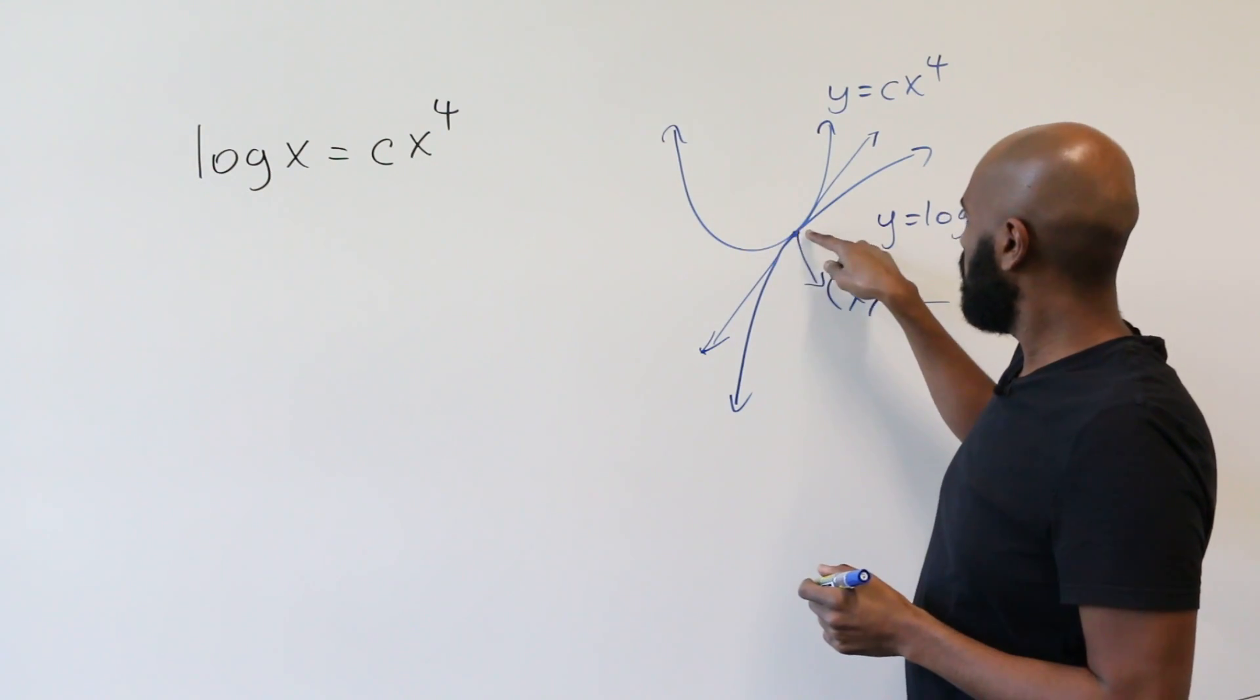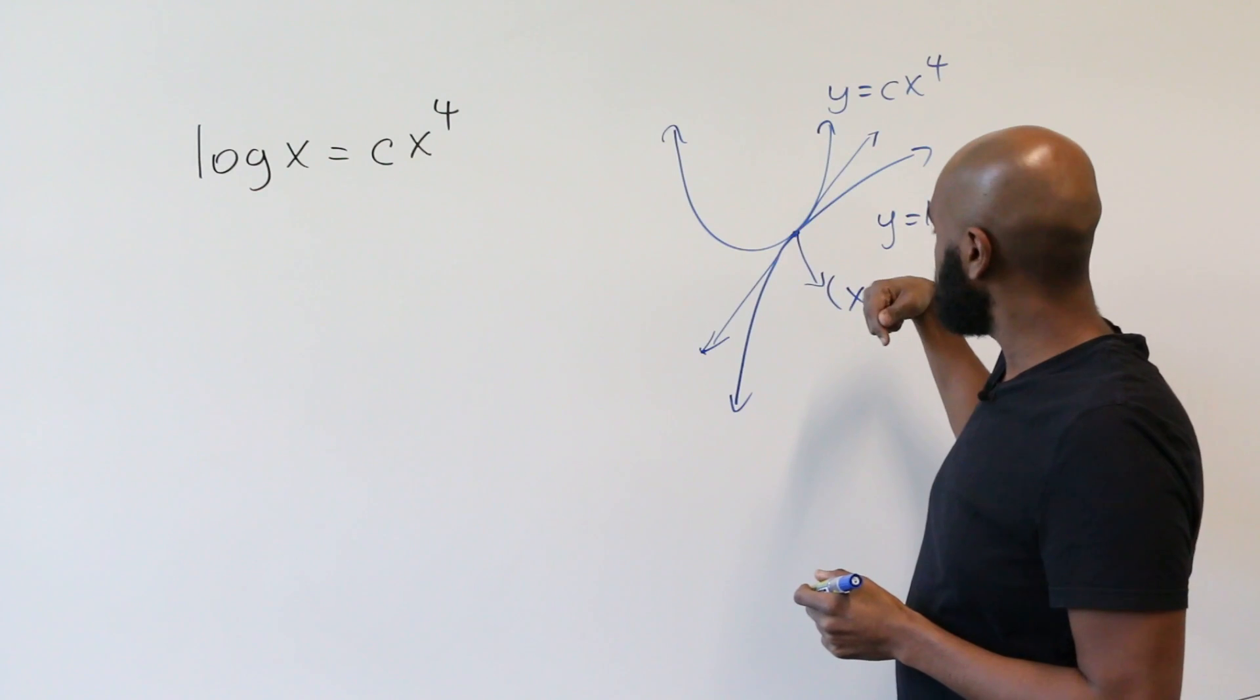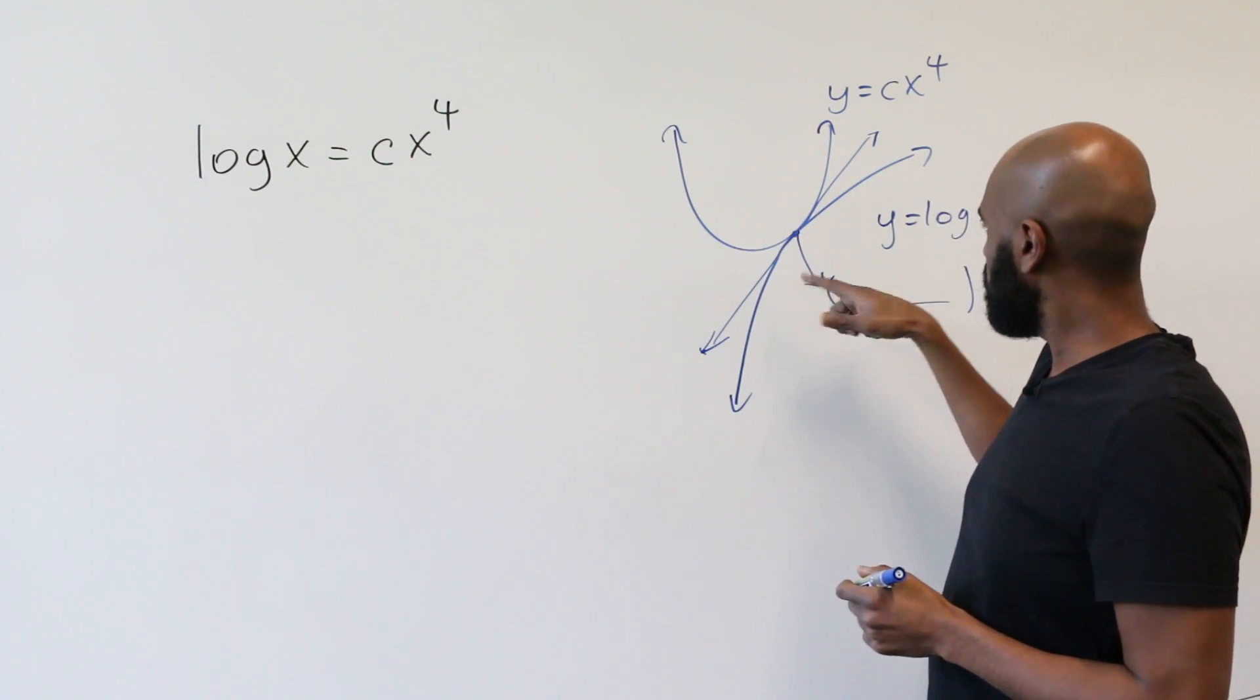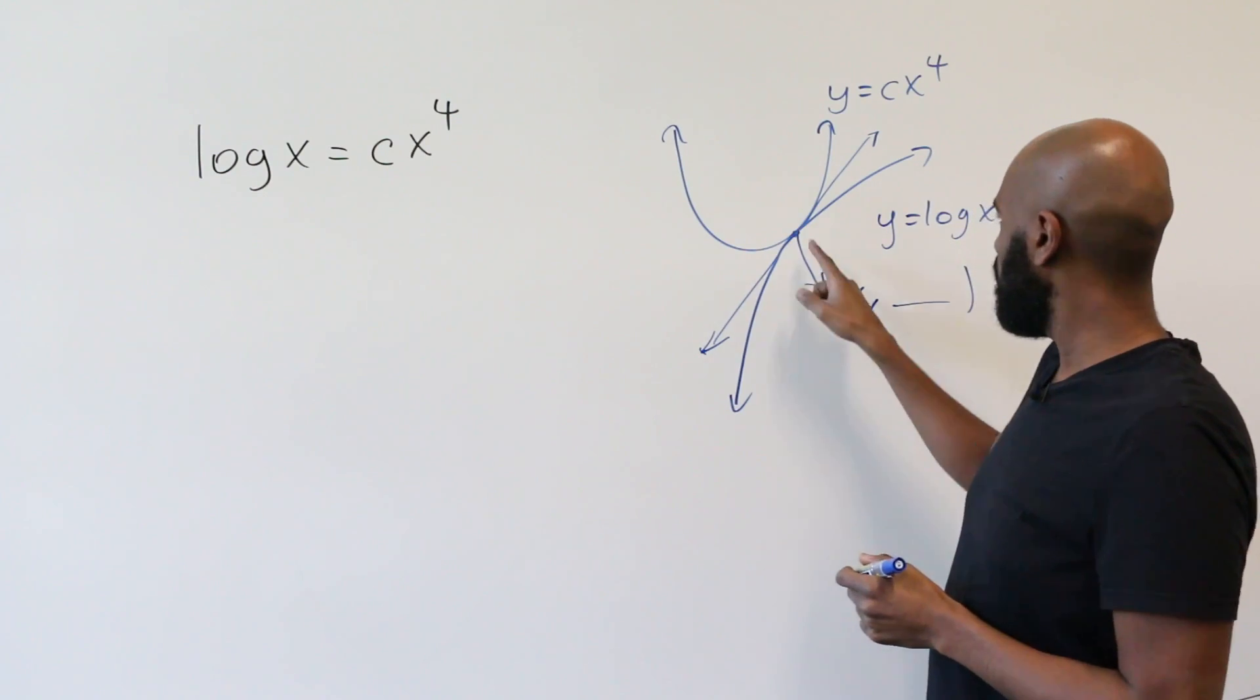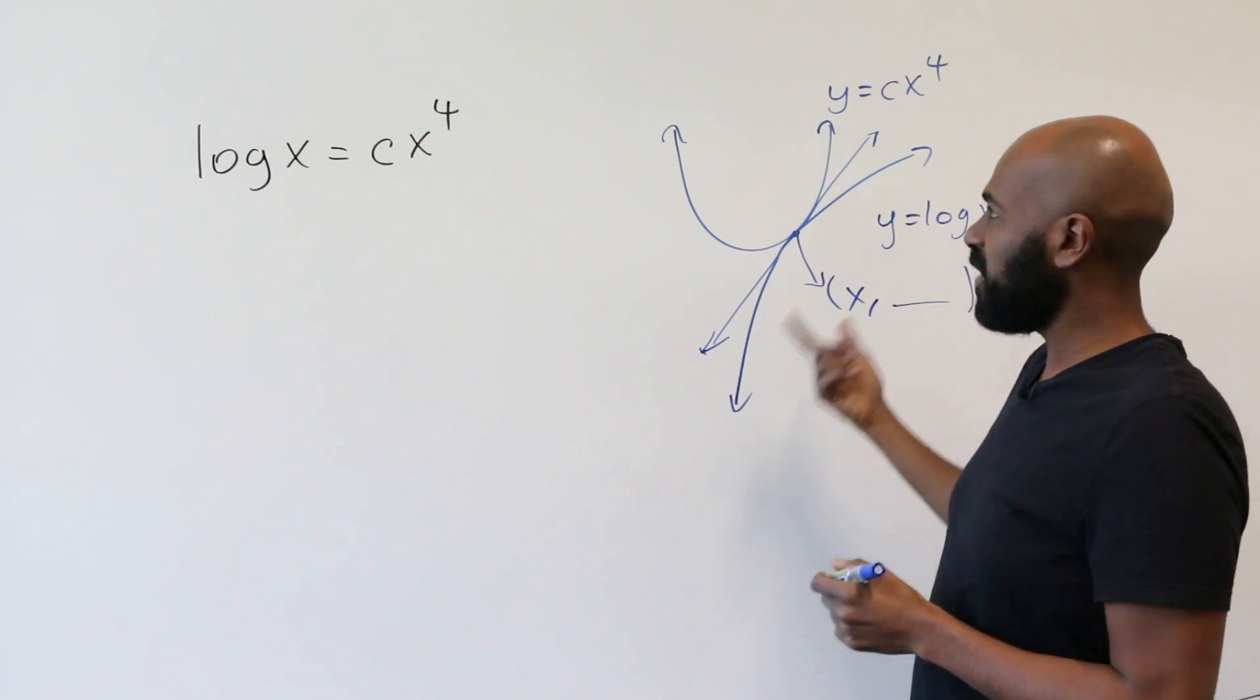So the slopes, the slope of the tangents has to be the same as well. And the slope of the tangents at this point x is the derivatives of the two functions evaluated at x.